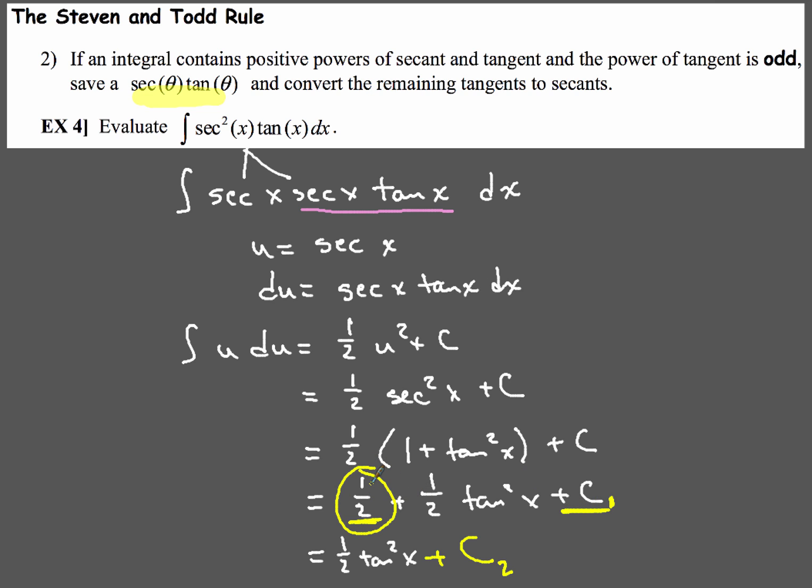So that's how you can work with integrals that contain secant and tangent, when u substitutions simply will not work. You can apply this Steven and Todd rule. All right, thanks for watching this video. You guys have a great day. Peace out.